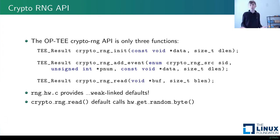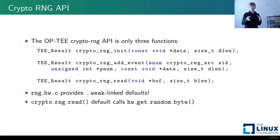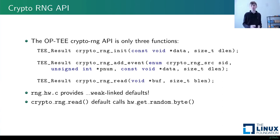Next is CryptoRNG_addEvent, used for adding entropy to the RNG — again specific to software pseudo-RNG and not relevant for a hardware device, so we don't need to implement it. Finally, CryptoRNG_read allows us to read a specified amount of random data from hardware into a user-supplied buffer. OPTI provides weak-linked defaults of all three functions. In the case of CryptoRNG_read, the default verifies parameters and then calls hardware_getRandomByte repeatedly to load random data from hardware into memory.